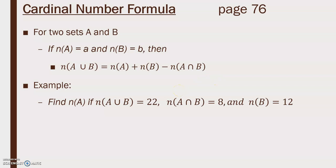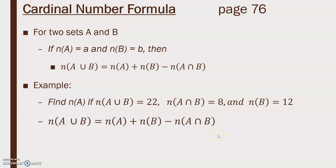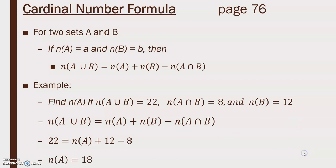Find the number of elements in A if n(A union B) = 22, n(A intersect B) = 8, and n(B) = 12. Substituting into the formula: 22 = n(A) + 12 minus 8. Therefore n(A) equals 18.